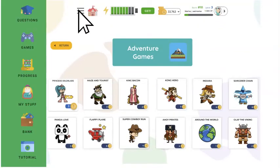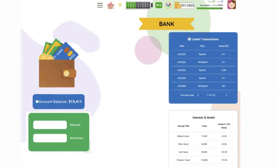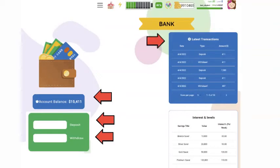Now let's go back to the main menu and choose the bank. The bank is a place where you can earn additional tokens just by saving them in your bank account. In the bank you can see your account balance — that's the total amount you have. You can make a deposit, which is putting money into the bank, or you can withdraw, which is taking money out of the bank. At the top right you'll find all your latest transactions when you deposit and withdraw. At the bottom you can see your interest and levels that you'll earn based on how much money you agree to keep in your bank.